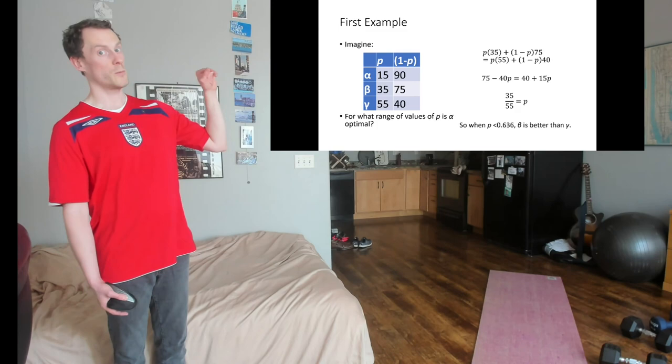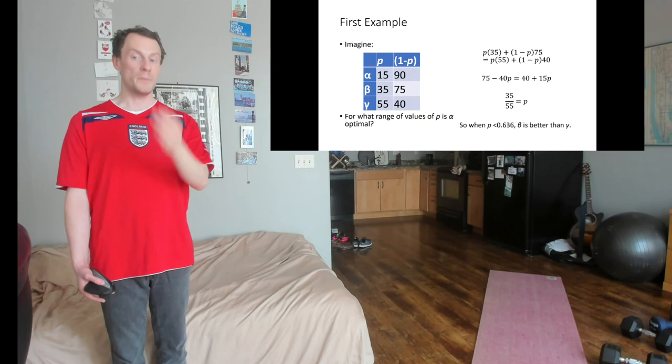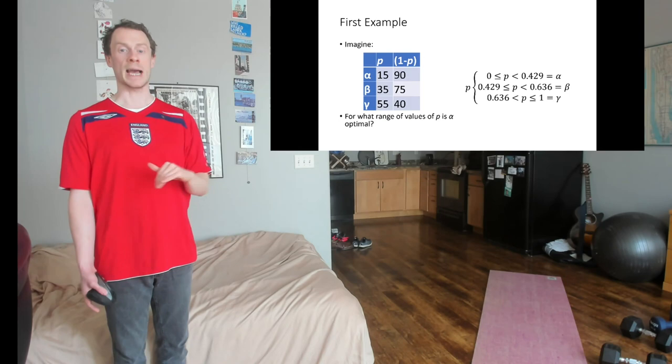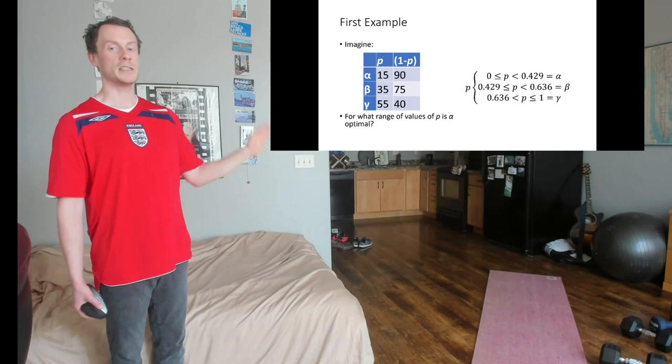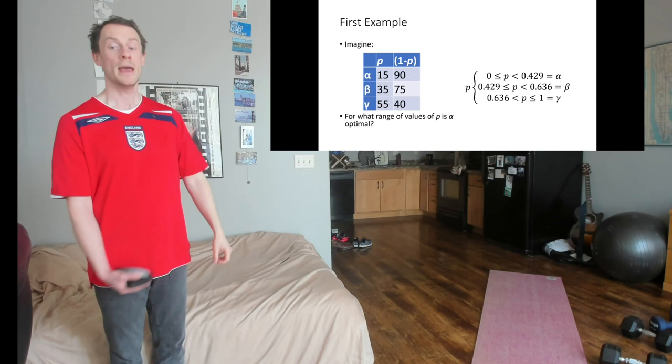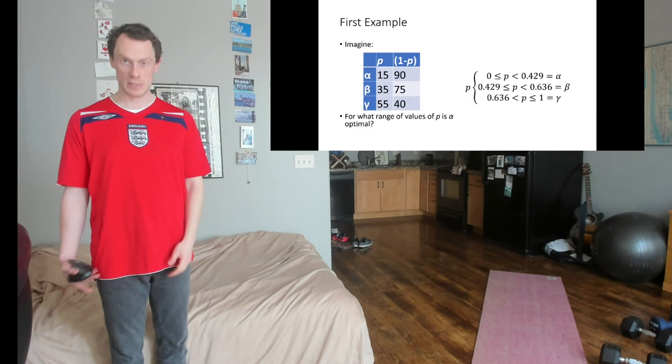Then we do the same thing for beta and gamma. And we find when P is less than 35 over 55, beta is better than gamma. And then we can do the same thing for alpha and gamma. And this is the answer to the question. When P is between zero and 0.429, alpha is the best lottery. When P is between 0.429 and 0.636, beta is the best lottery. And when P is greater than 0.636, gamma is the best lottery.